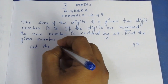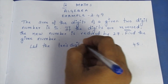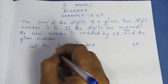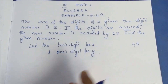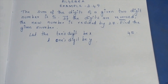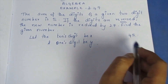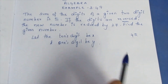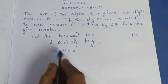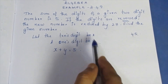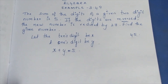Let the tens digit be x and the units digit be y. There are two digits: the tens digit and the units digit (ones digit). We will count them and assign variables accordingly.